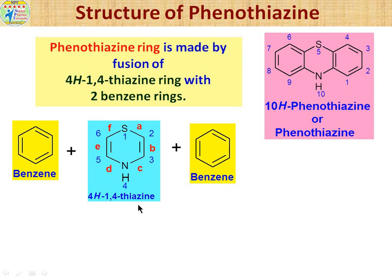Now we also need to indicate the positions of sulfur and nitrogen. The numbering must start from sulfur and proceed toward nitrogen. So the numbering goes: first, second, third, fourth, fifth, and sixth position.